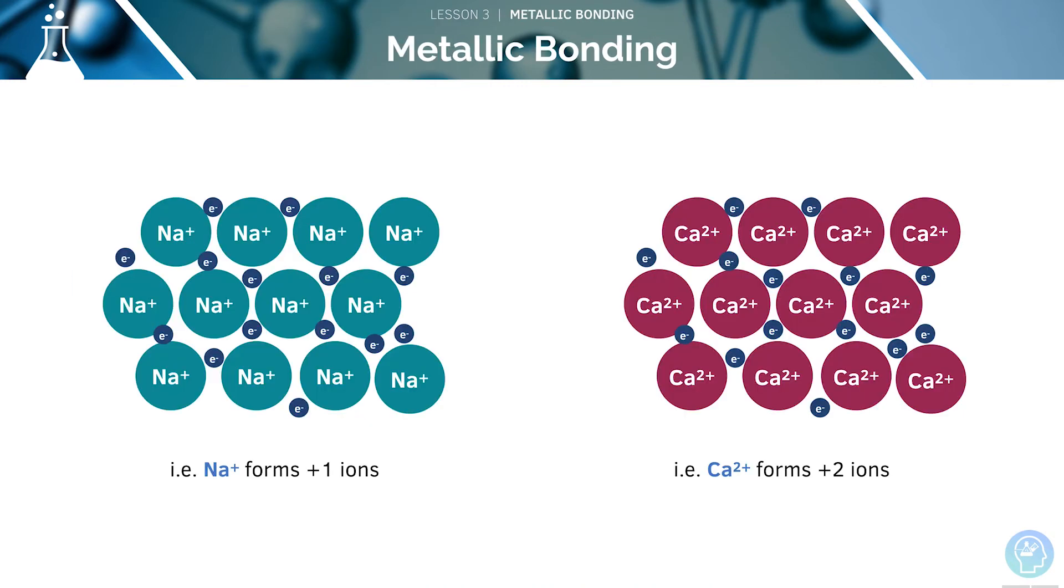Here, we can see that sodium forms plus 1 ions, whilst calcium forms plus 2 ions. This means that the calcium will have a stronger electrostatic attraction between its delocalised electrons and positive nuclei, and therefore will have a higher melting point than sodium.